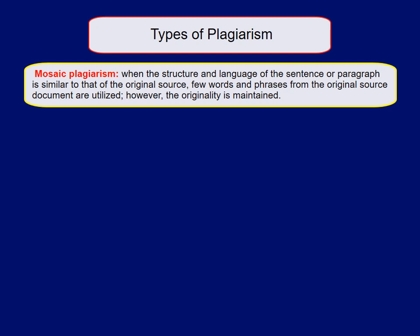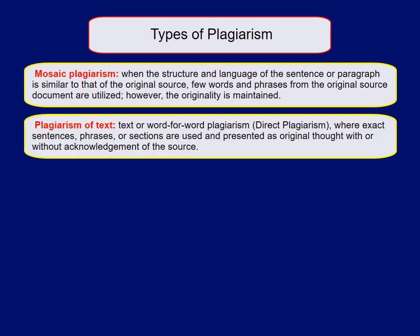The first type is mosaic plagiarism, which occurs when the structure and language of a sentence or paragraph is similar to that of the original source, and only a few words and phrases from the original are utilized while originality is otherwise maintained. The second type is plagiarism of text — also called word-for-word, direct, or copy-and-paste plagiarism — which occurs when exact sentences, phrases, or sections are used and presented as original thoughts, with or without acknowledgement of the source.